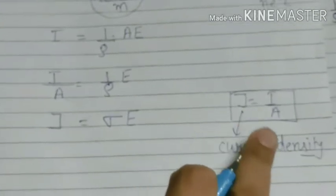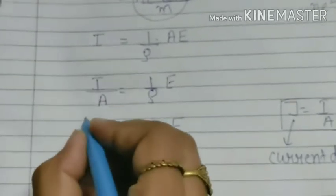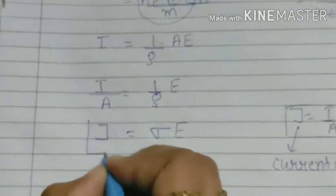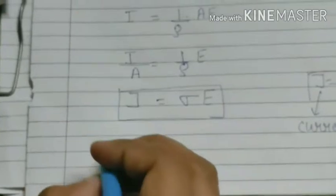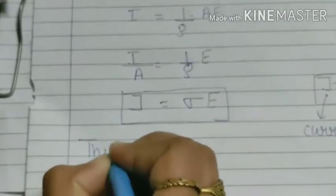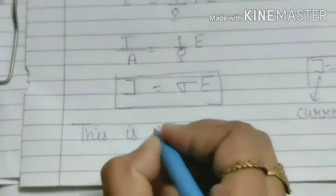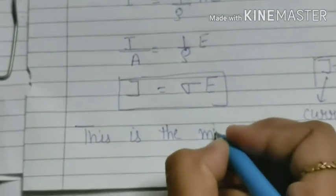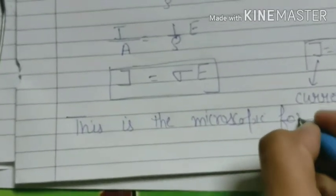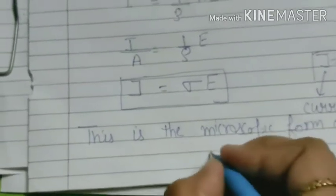Current density is defined as the current per unit area, so J = σE. This is the microscopic form of Ohm's law.